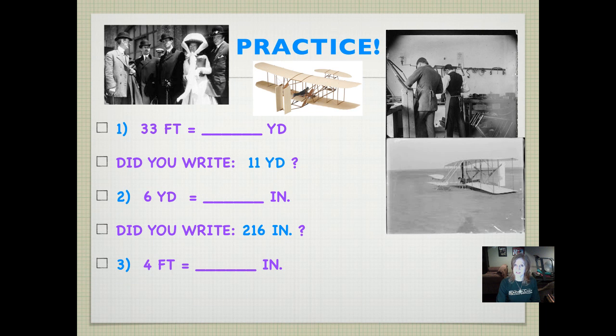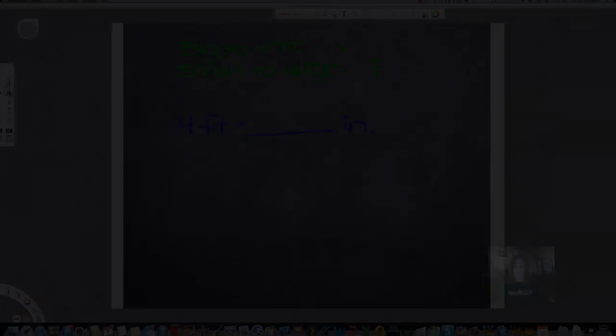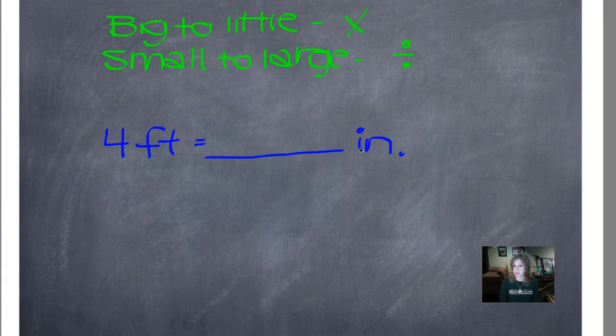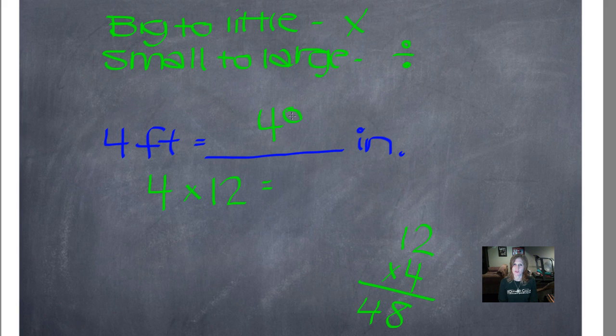Number 3, 4 feet equals how many inches. Pause it and push play when you're ready. Did you write 48 inches? Let's see how we did that one. So this time we know we have 4 feet and we want to know how many inches that is. So we will bring our 4 right down. And then we look at our units of measurement. I have feet here and inches here. So I'm going from feet to inches. And feet are bigger than inches. So I'm going from big to little. And so I'm going to multiply. Big to little, multiply. Small to large, divide. Now I have to just figure out how many inches are in a foot. And there are 12 inches in 1 foot. So my answer will be the answer to 4 times 12. And I'll work it out here, but I actually have it memorized. 48 inches. It's always okay to work it out to make sure. Sometimes our memories, we might make a quick mistake. 4 feet equals 48 inches.